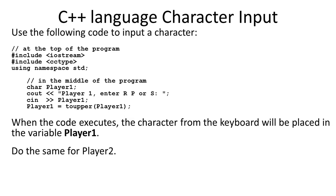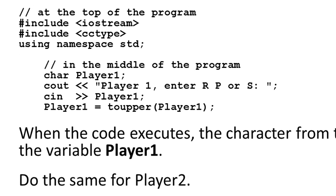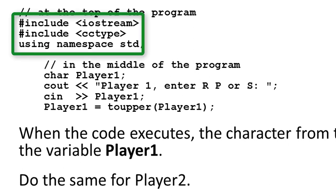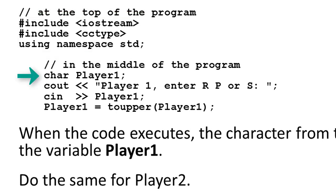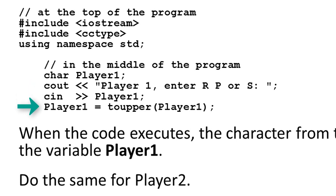The process is similar for using C++. This time I need to include iostream, and I'll include the C++ version of ctype.h, which is called cctype. I also need to make sure I use 'using namespace std'. I'll define a character variable for player 1, then use cout to prompt 'player 1, enter R, P, or S', and use cin to input from the keyboard and store it into player1. Then, same thing — convert player1 to uppercase. You need to do the same for player 2 if you're using C++.